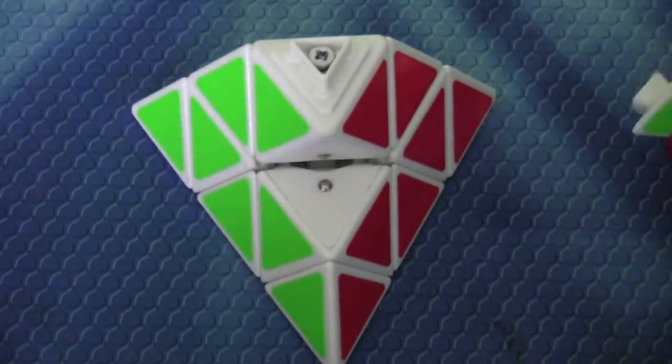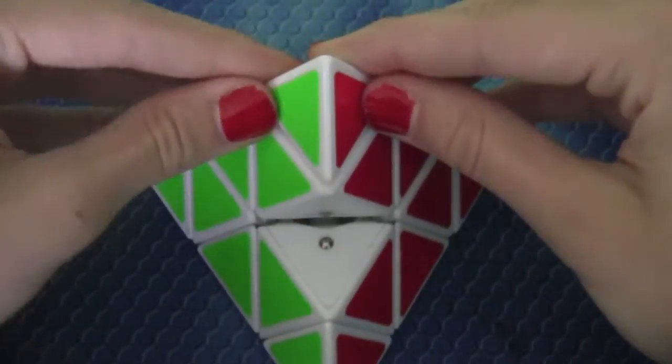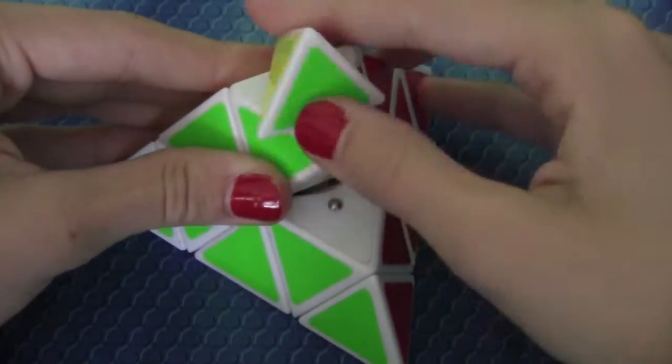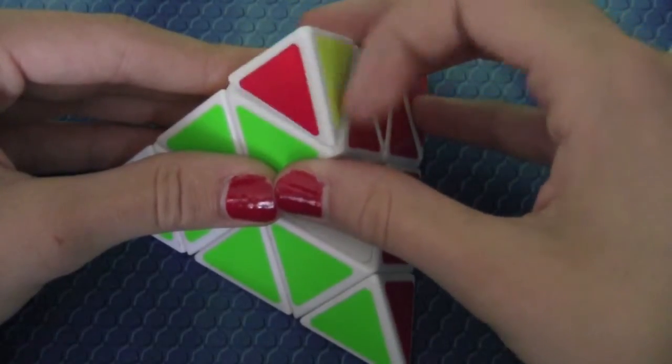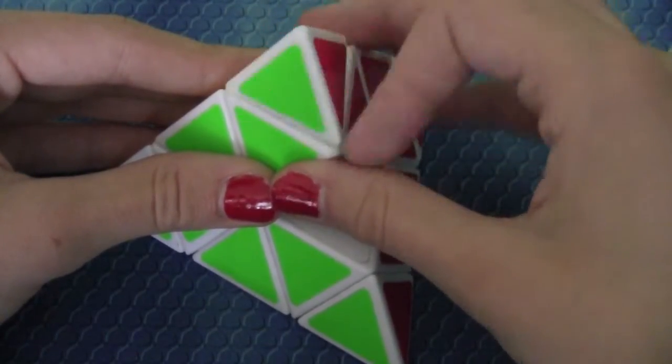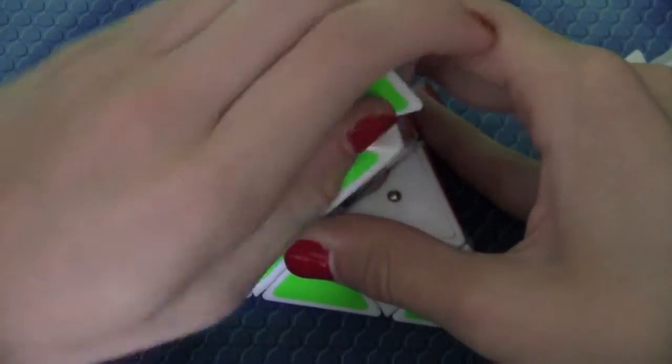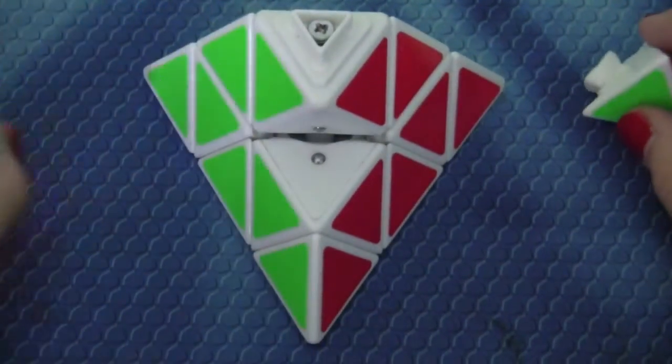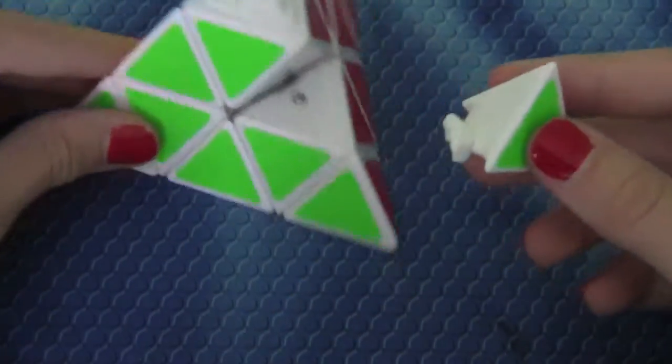So now getting to the modifications that I did. I didn't do anything to the tip, although in Oscar's video, he did modify the tip. But I didn't find it necessary because I believe that these tips move really well. So I decided that it wasn't necessary at all to modify the tip. But if you would like to modify the tip of the puzzle, you can just watch his video like I said.